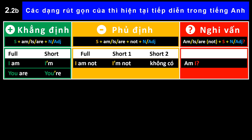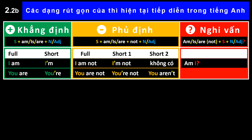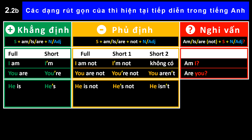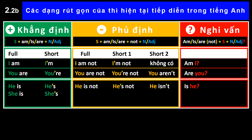You are → You're. You are not → You're not. Are you? He is → He's. He is not → He's not. Is he? She is → She's. She is not → She's not. Is she?